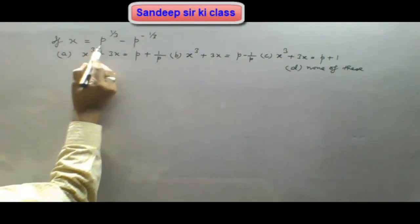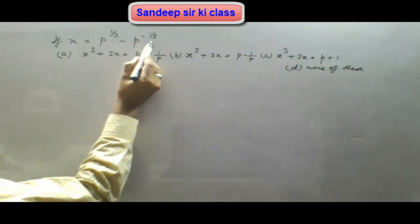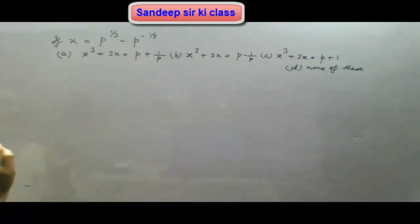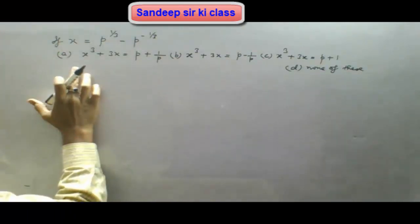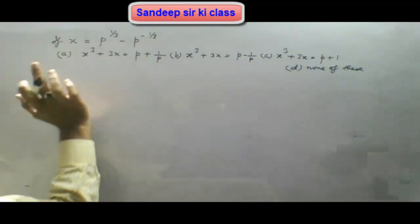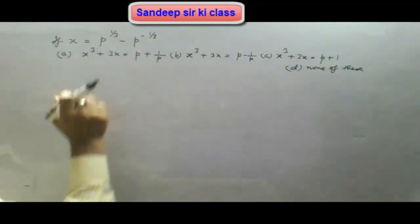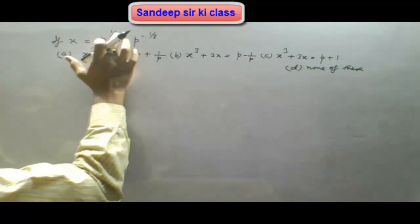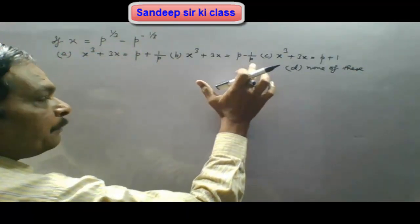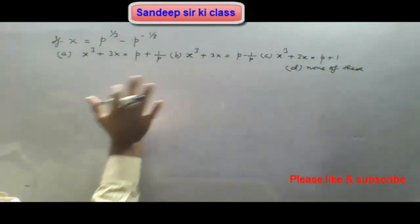The question is: if x is equal to p to the power 1/3 minus p to the power minus 1/3, which of these options is correct? We note that in the options the power of x is 3 and here the power of x is 1. Also, the power of p is 1/3, which in the options has power of p as 1. So we are to cube both sides.